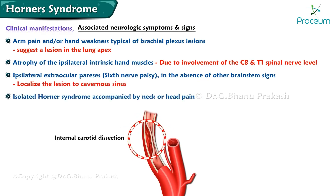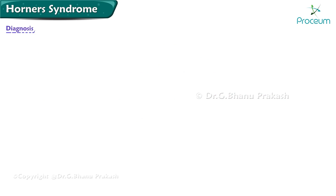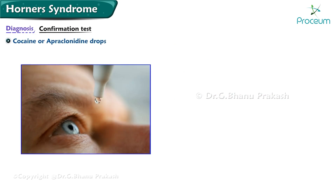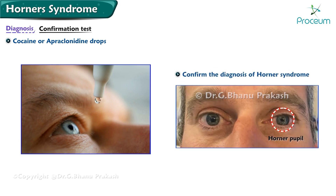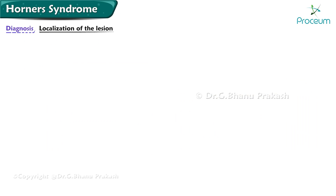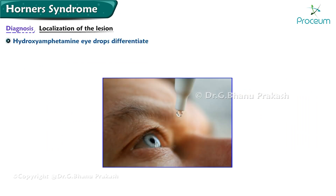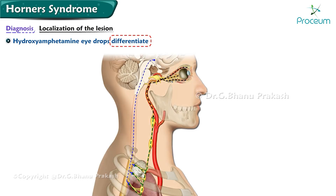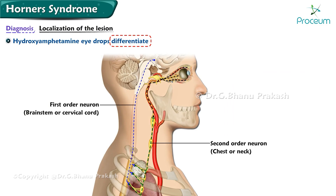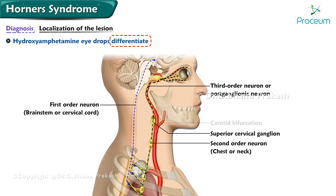An isolated Horner syndrome accompanied by neck or head pain suggests an internal carotid dissection. Pharmacologic testing with cocaine or apraclonidine drops can confirm the diagnosis of Horner syndrome. Hydroxyamphetamine eye drops will differentiate between a lesion affecting the first-order (brainstem or cervical cord) or second-order (chest or neck) neuron and one affecting the third-order or post-ganglionic neuron above the superior cervical ganglion at the carotid bifurcation.